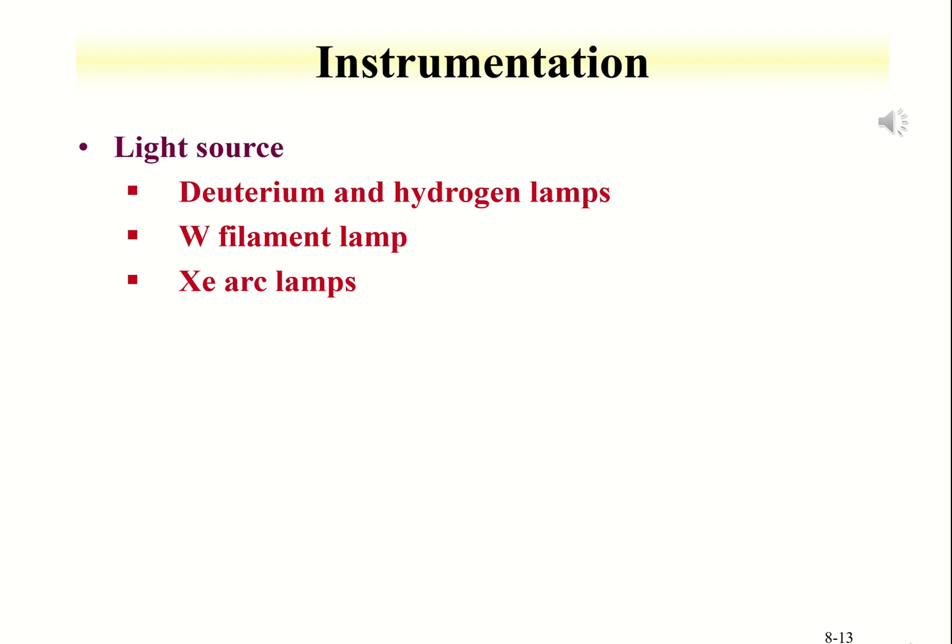This is additional information on different types of light source found in a UV-visible spectrometer. They offer different range of light radiation in general.